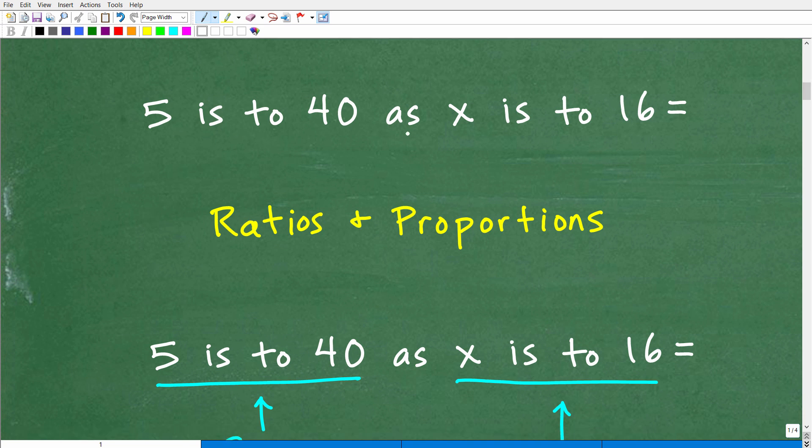Alright, so 5 is to 40 as x is to 16. What this is is a math problem that falls under the topic of ratios and proportions. And typically when you're studying mathematics, especially like the middle school level, pre-algebra, algebra, and beyond, you'll have some sort of unit or chapter that will say something like proportions or ratios. And really there's even another word in here called rates. Rates, ratios, and proportions.